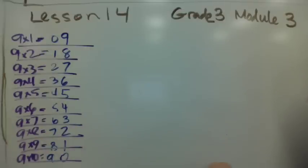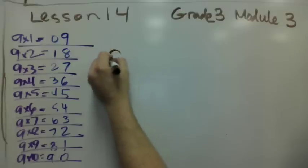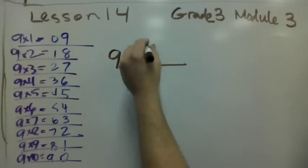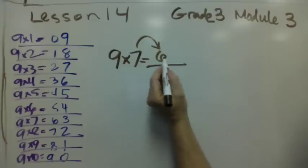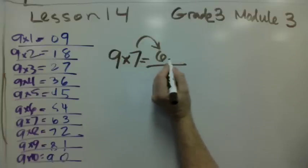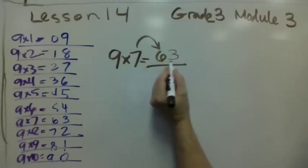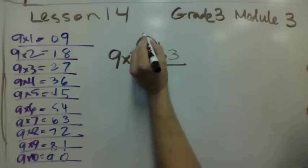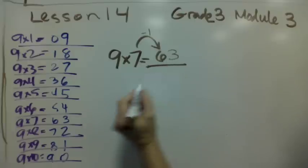Now another trick that we learned is if you're going to do like 9×7, we learned that the tens place is always going to be one less. And then these two numbers, the tens place and the ones place, have to have a sum of 9. So 6 plus 3 is 9. So 9×7 is 63. You take the 7, you do one less, you get 6, and then you say 6 plus what gives us 9.